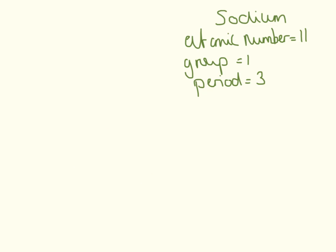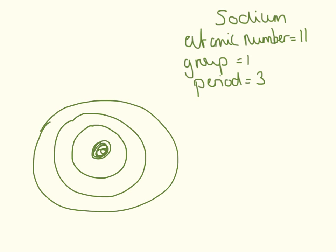Next is sodium. Its atomic number is 11, so it has 11 electrons. It's in group one, so it has one electron in its outer shell. It's in period three, so it has three shells. I draw three shells, start from the middle with two electrons on the first shell, fill up to 11, and expect one electron on the outer shell: one, two in the first; three through ten in the second; eleven in the third shell.